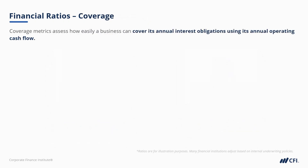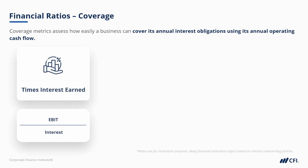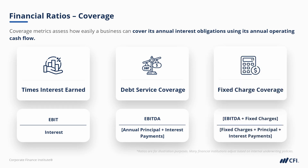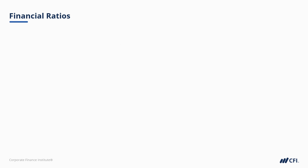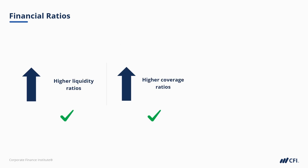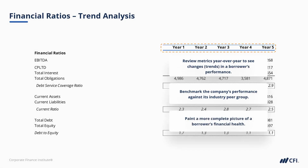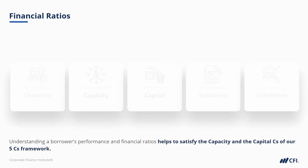Coverage metrics assess how easily a business can cover its annual interest or interest plus principal obligations using its annual operating cash flow. Common ratios include EBIT over interest, debt service coverage (often abbreviated to DSC), and fixed charge coverage (or FCC). All other things being equal, higher liquidity and coverage ratios and lower leverage ratios tend to correspond with a lower likelihood of default. Credit professionals must conduct trend analysis as well as benchmarking against industry peers in order to paint a more complete picture of the borrower's financial health. Understanding a borrower's performance and financial ratios help to satisfy the Capacity and the Capital C's of our 5 C's framework.